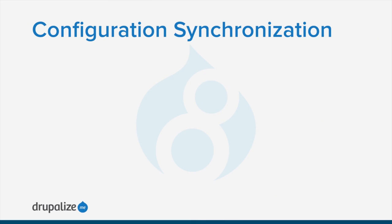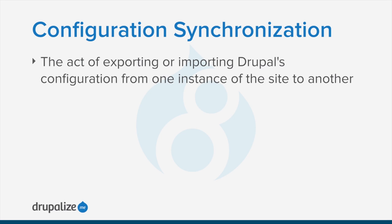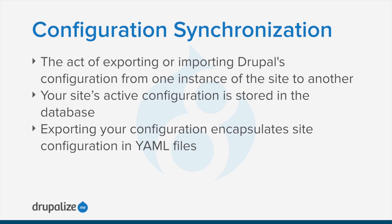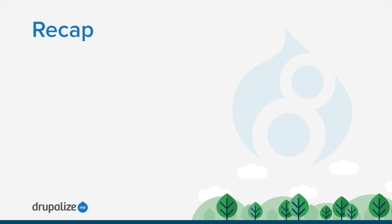Particularly if you leverage tools like Drush and Git. Configuration synchronization is the act of exporting or importing Drupal's configuration from one instance of a site to another. Your site's active configuration is stored in the database, and exporting your configuration encapsulates your site's configuration in YAML files, exported to a directory defined in your settings.php.